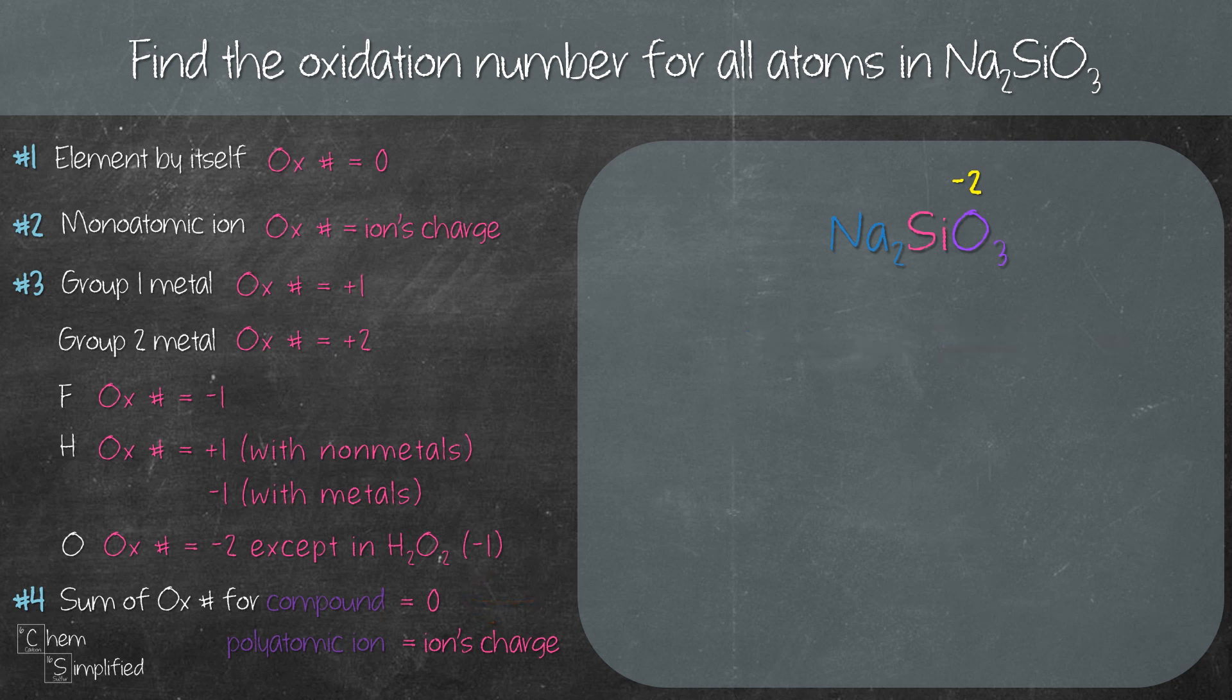So what we're gonna have to do is break this compound down because Na₂SiO₃ is an ionic compound consisting of sodium metal and a polyatomic ion which is silicate ion.